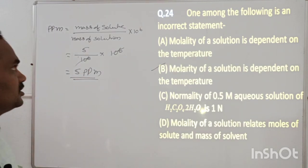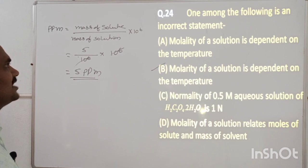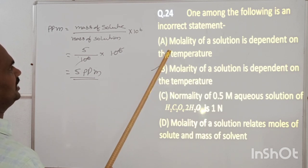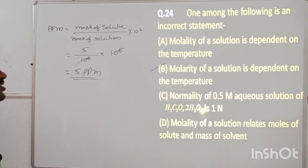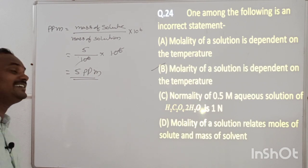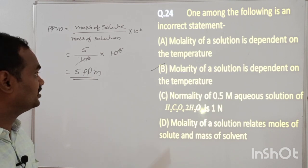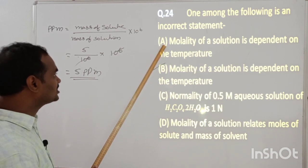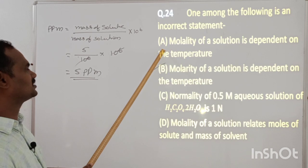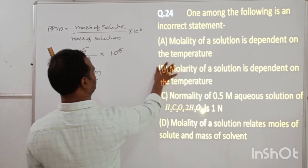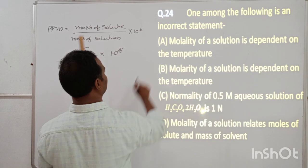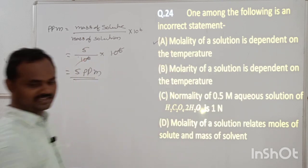Problem 24: Among the following, which is an incorrect statement? Molality of a solution is dependent on temperature — this is wrong, because molality is independent of temperature as there is no volume term. So the incorrect statement is A, and the correct option is A.